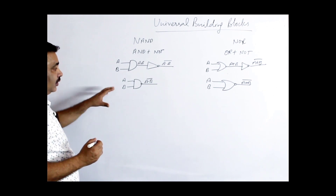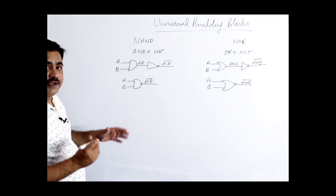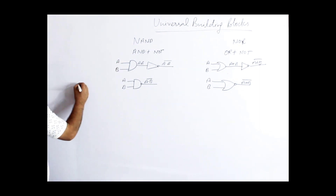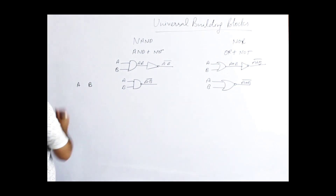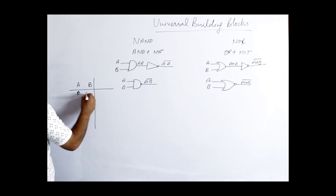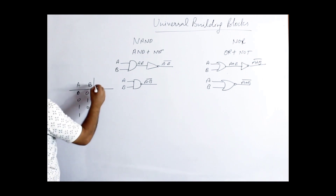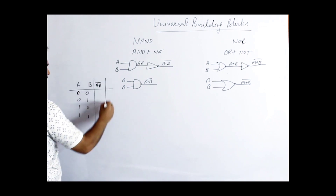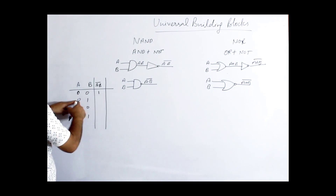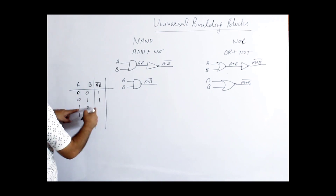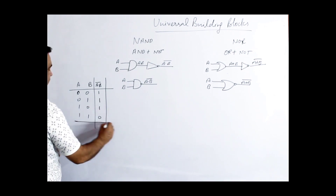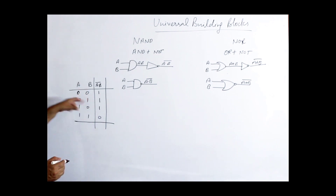Now, the truth table for NAND gate. If A and B are two inputs — 00, 01, 10, 11 — the output is A·B complement. When A and B are both 0, A·B is 0 but its complement is 1. When A=0, B=1 or A=1, B=0, A·B is still 0 so complement is 1. When both are 1, A·B is 1 but complement is 0. So this is the truth table for NAND gate.